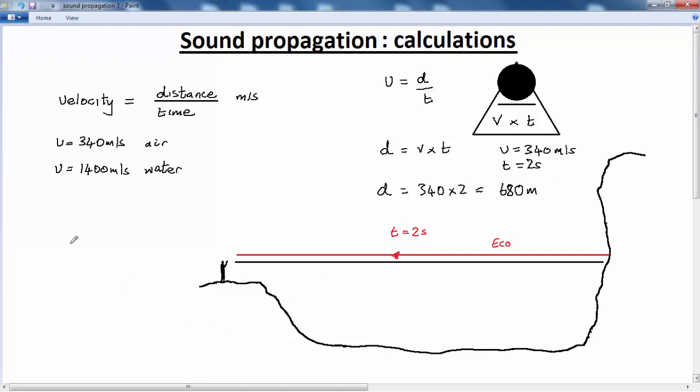So we can write the distance to the mountain is equal to half the distance covered by the sound pulse, which will be 680 divided by two, which is equal to 340 meters.